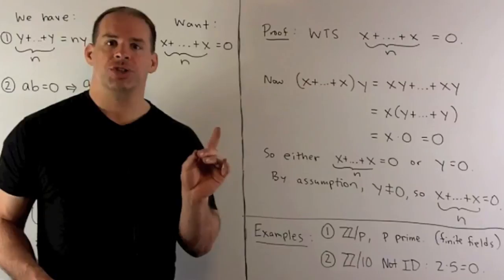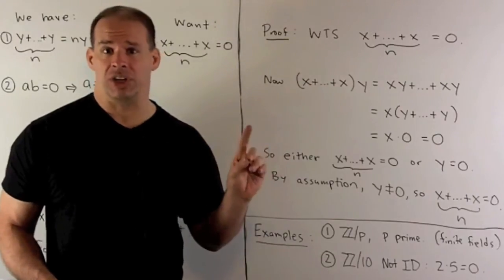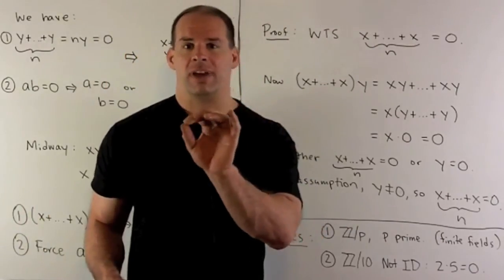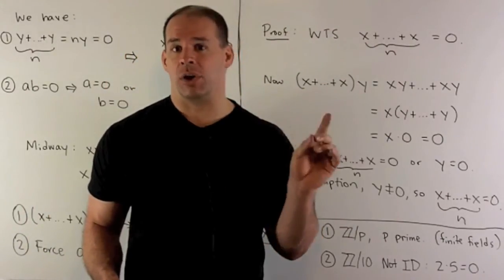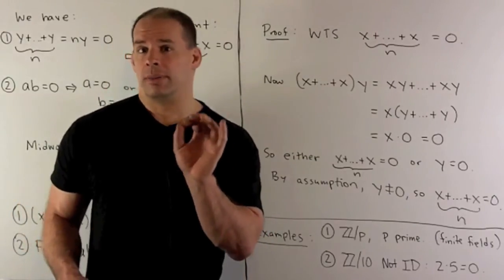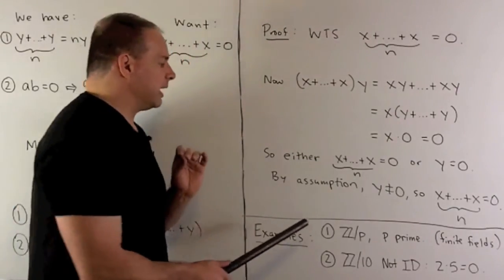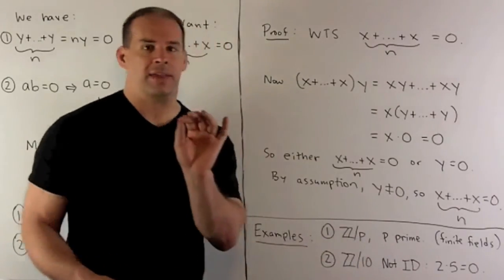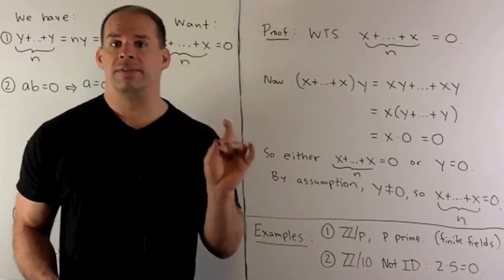Now, integers are not going to be a very good model for this situation. We never have sums of an integer with itself that give us zero, unless we're starting off with zero. So the model you want to think of here is going to be Z mod p, where p is a prime number. And then this is going to get you into the area of finite fields.